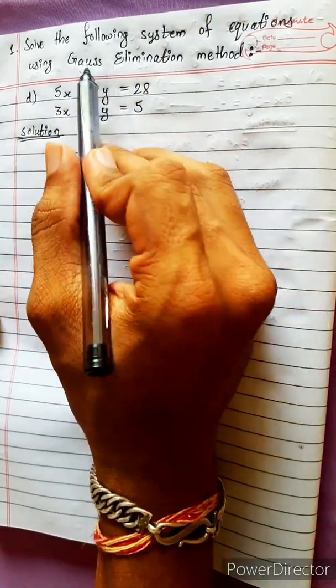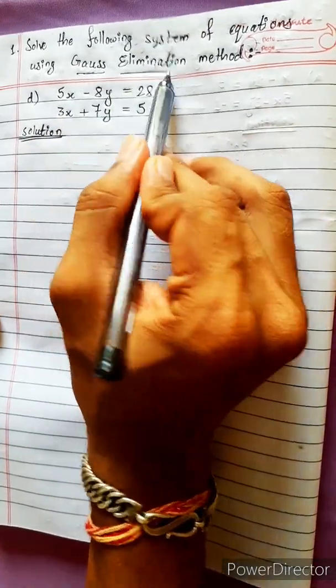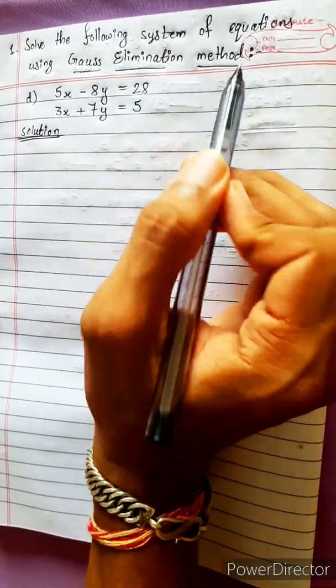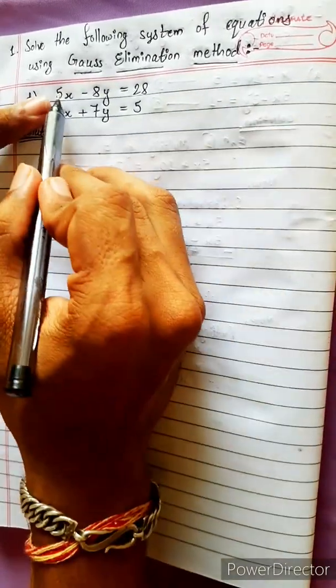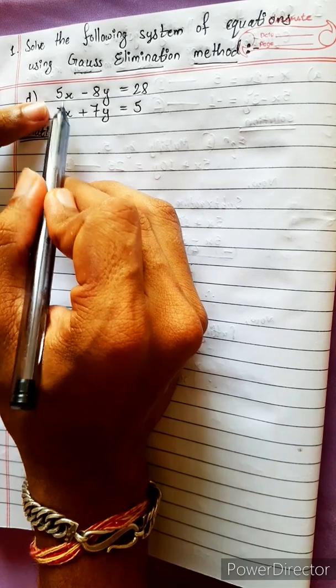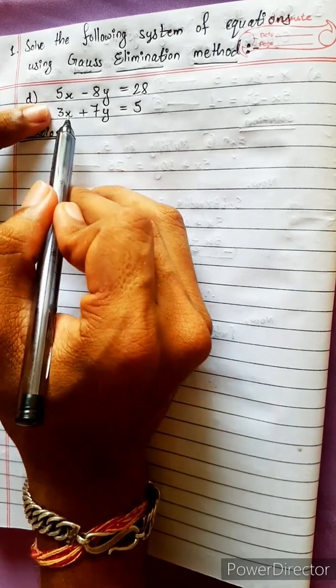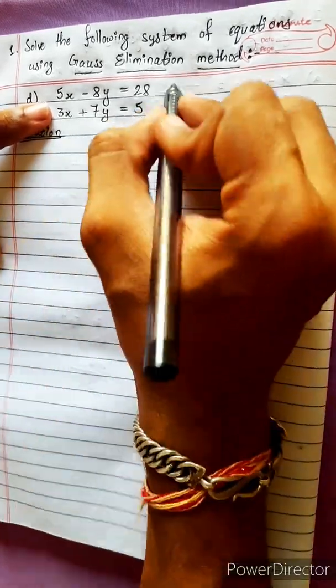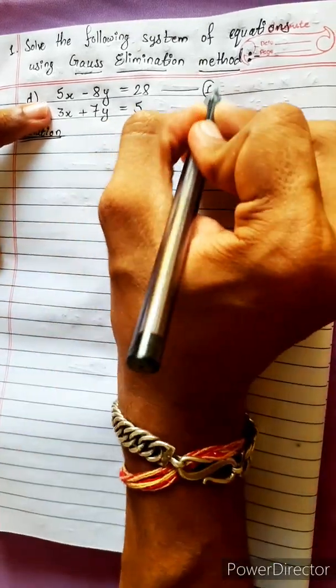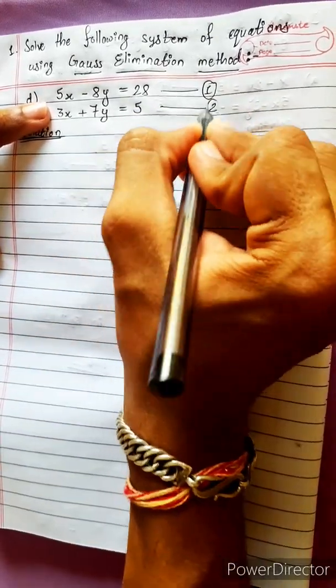Solve the following system of equations by using the Gauss elimination method. This method involves equations with the same coefficients. This is equation 1y and this is equation 2y.